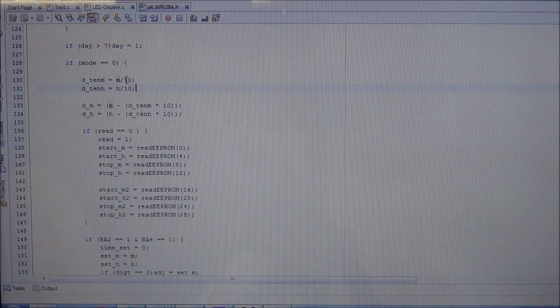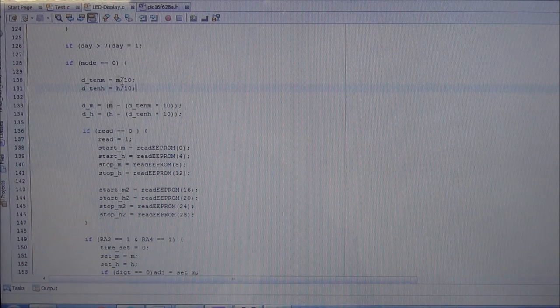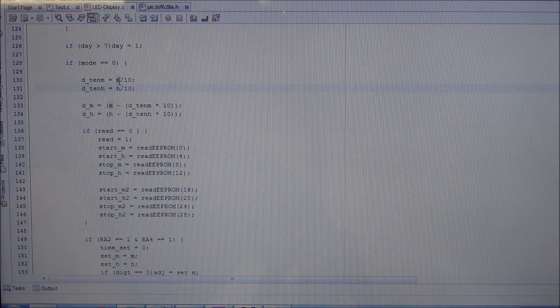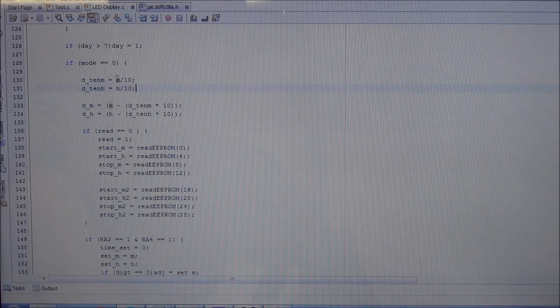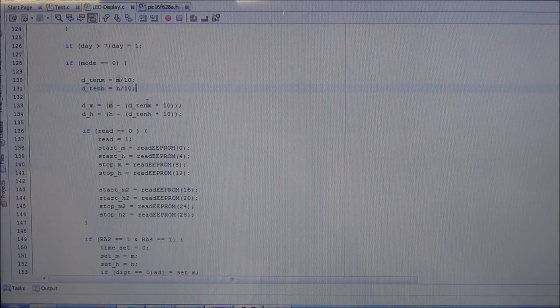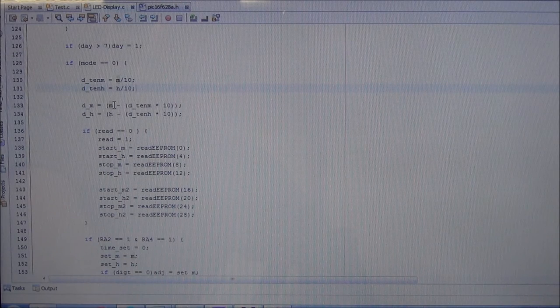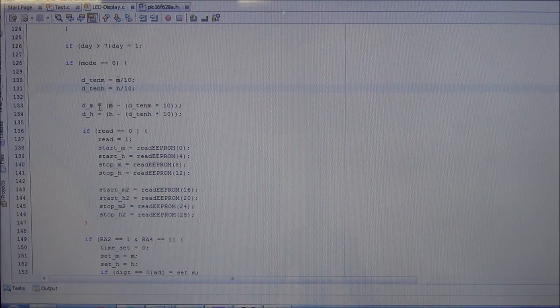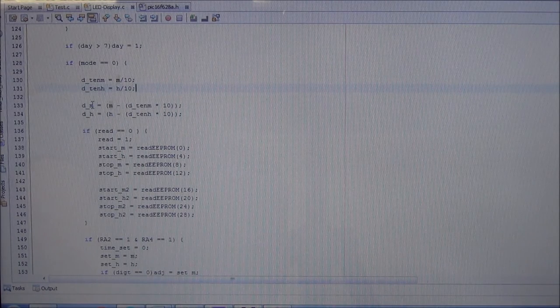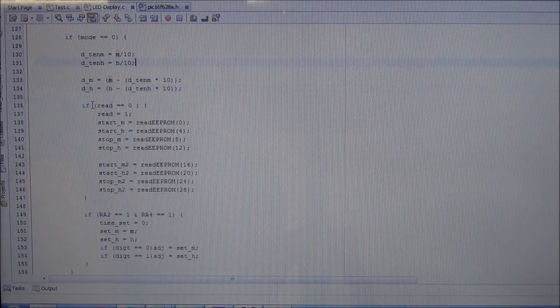And by multiplying this by 10 again we have just lost the least significant digit. If it was 12 we will just lose the 2 and we'll get a 10. If we subtract that from the original we'll get the least significant digit. And exactly the same thing for the hour.